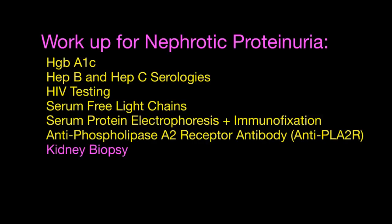How would you actually work up a patient who has nephrotic-range proteinuria before a kidney biopsy? First, rule out advanced diabetic nephropathy by checking for diabetes. It's also worth checking hepatitis B and hepatitis C serologies, since chronic hepatitis B or C can be associated with membranous and other glomerular diseases. Test for HIV as well, since HIVAN — HIV-associated nephropathy — is a subtype of FSGS.